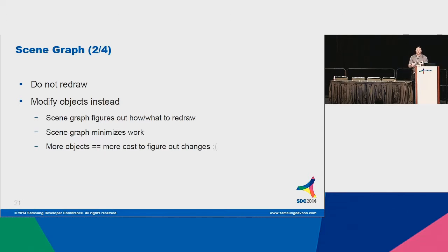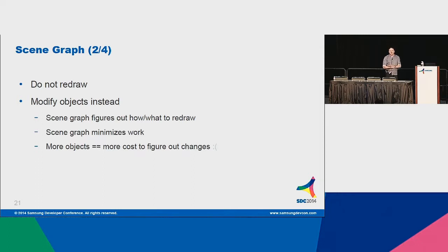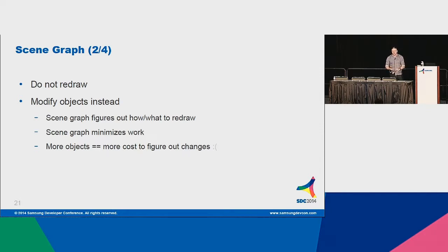You don't have to worry about redraw or update regions — that's automatically calculated for you. The scene graph will even turn changes to a fully-obscured button into a no-op, because during evaluation it finds that button is hidden so it doesn't need rendering. The only catch is that the more objects you have, the more expensive evaluation is. So try to keep the number of objects to a minimum — delete objects you don't need anymore, as recreation is not very expensive.